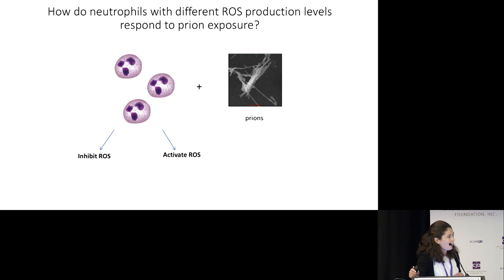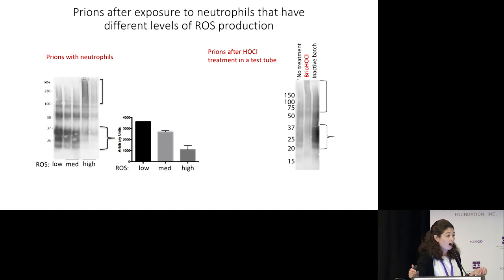This looks very much like what happens when we treat prions with the hypochlorous acid solution as a disinfectant — where we change those prions — and when this happens, they no longer cause infectious disease in animals.